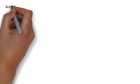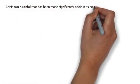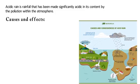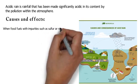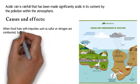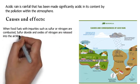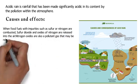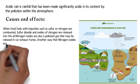Acid rain. Acidic rain is rainfall that has been made significantly acidic by pollution within the atmosphere. When fossil fuels with impurities such as sulfur or nitrogen are combusted, sulfur dioxide and oxides of nitrogen are released into the air. Nitrogen oxides are also a pollutant gas released in car exhaust fumes, and another way that nitrogen oxides are made is during lightning.